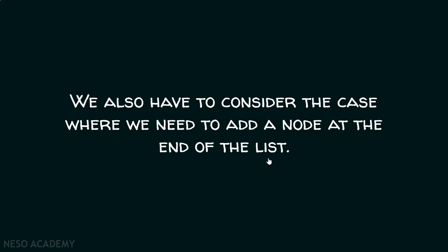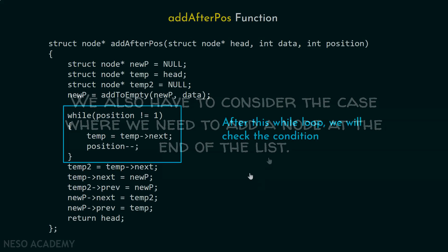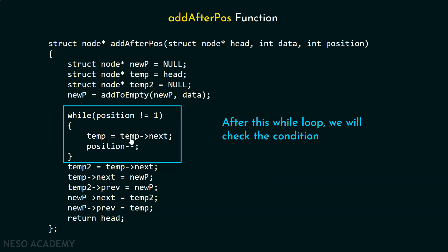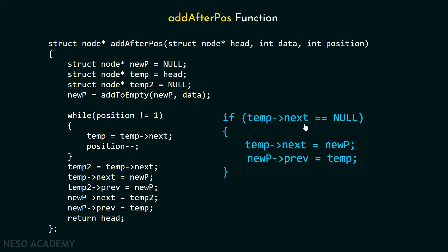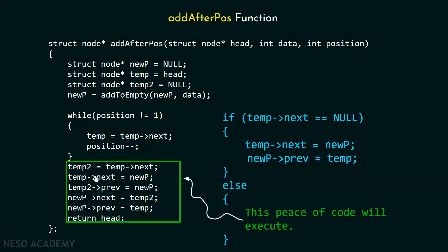For this purpose, after the while loop, we will check this condition: if temp next is equal to null, that means we have reached the end node. In that case, temp next must be updated by new p, and new p prev must be updated by temp. We must update the next part of the last node and the prev part of the new node. In the else part, we keep the previous piece of code.